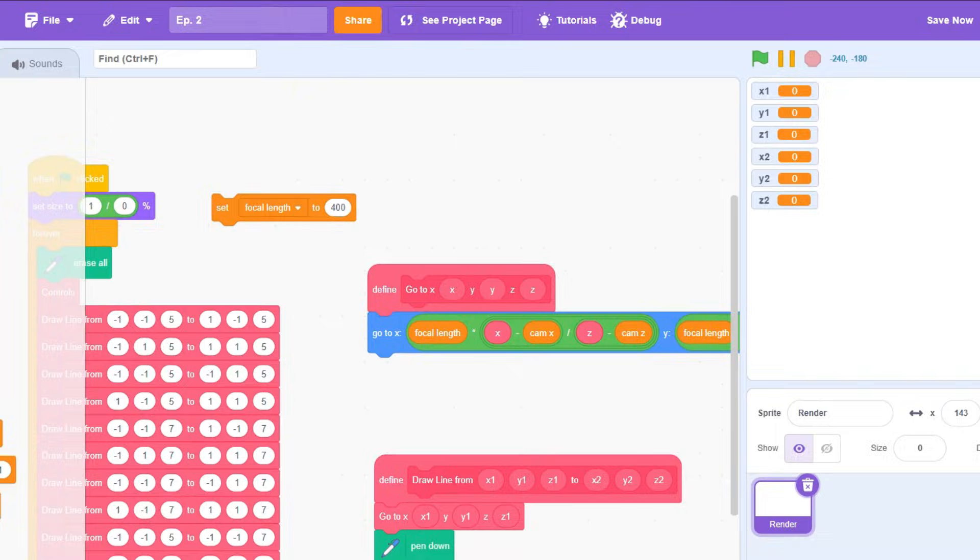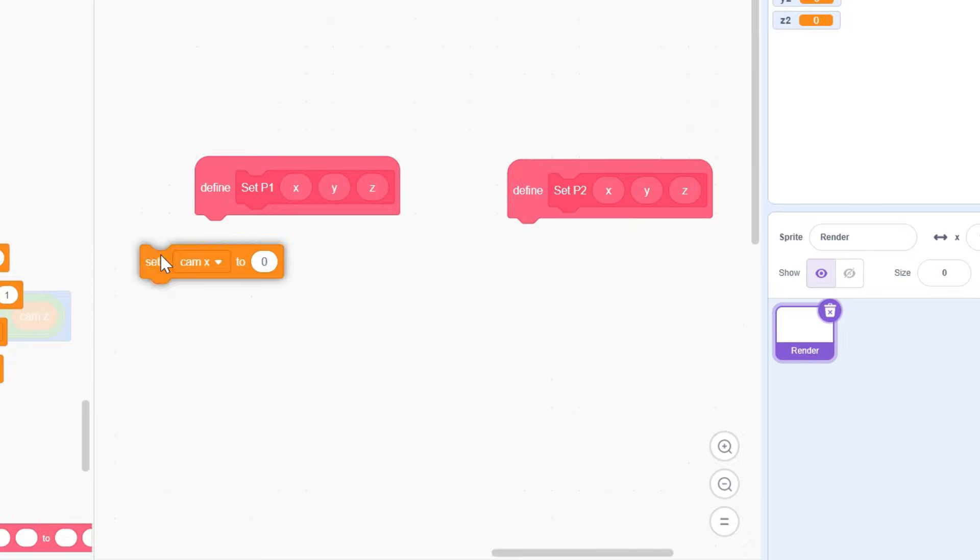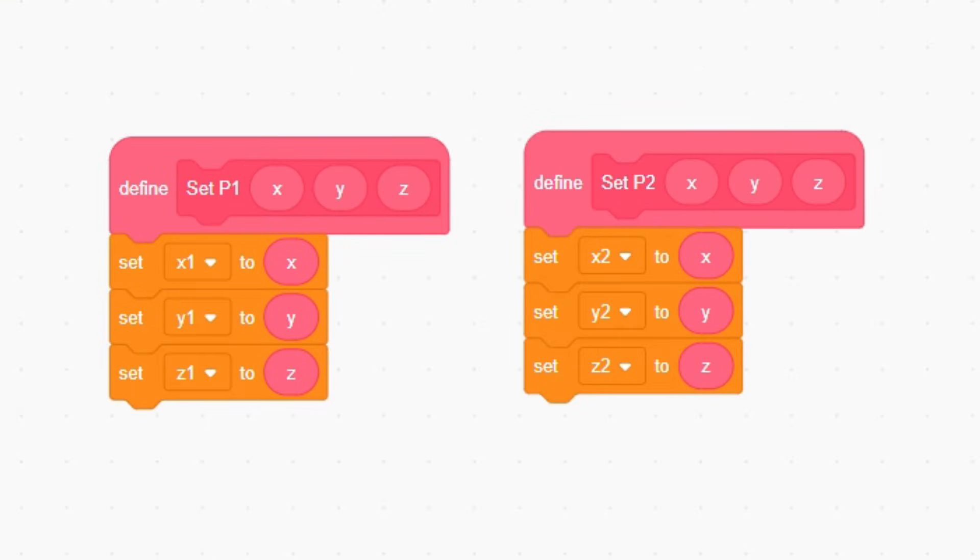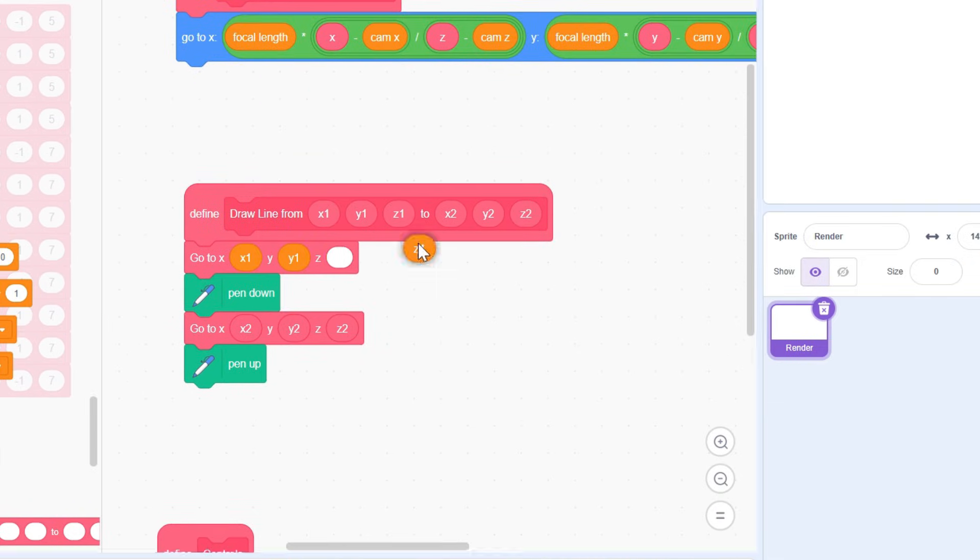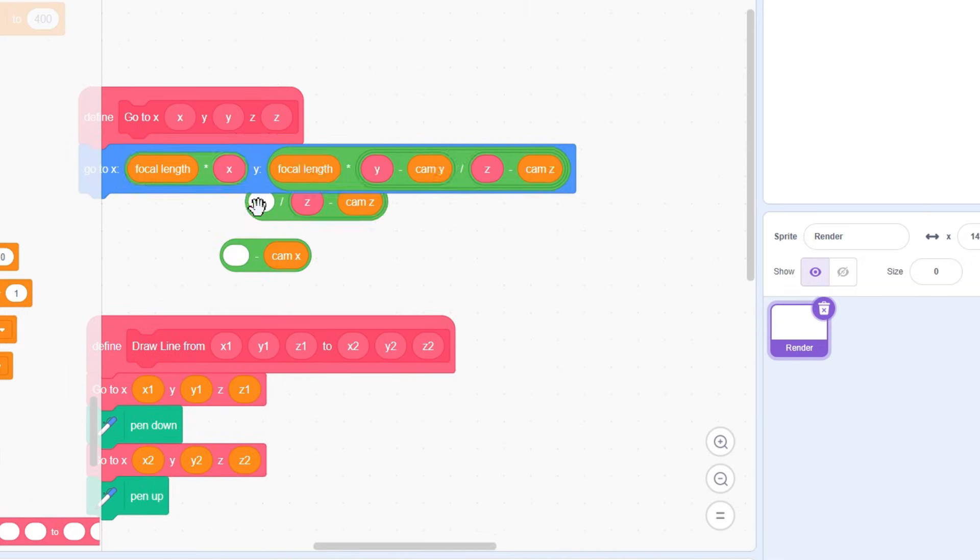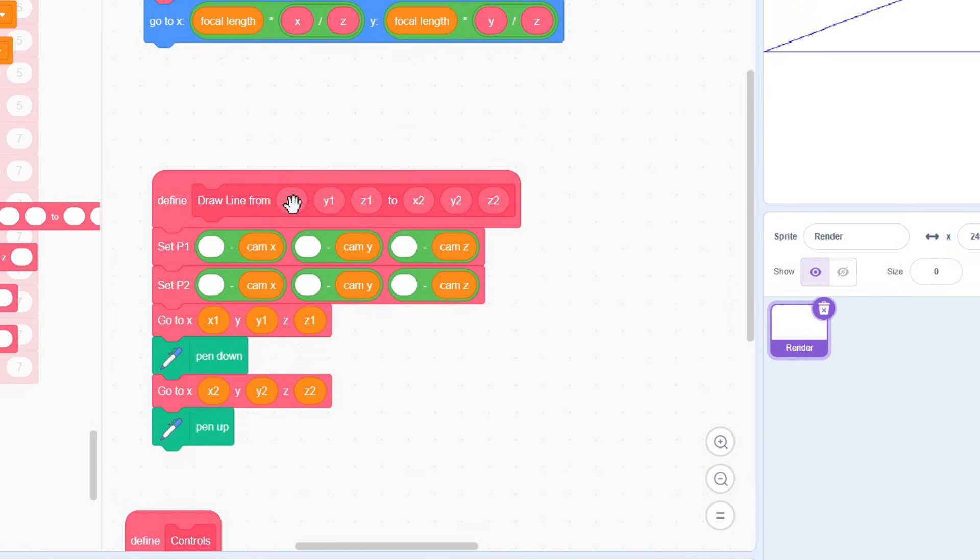and 2 new custom blocks, setpoint1 xyz, and setpoint2 xyz. Place the respective variables in each of these blocks so it looks exactly like this. Then in the drawline block, we're gonna replace the pink inputs with the orange variables.